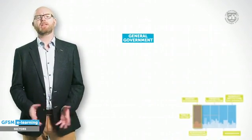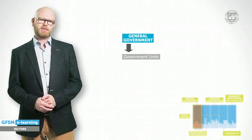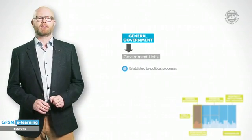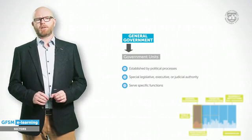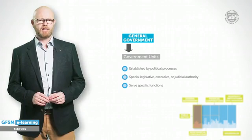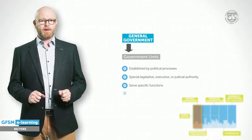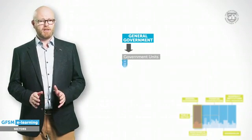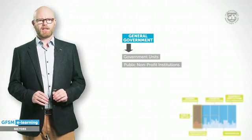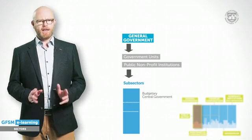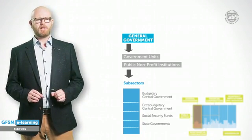How are the five main sectors and sub-sectors of the resident economy delineated? Let's start with the general government sector. Government units are unique legal entities established by political processes. They have a special legislative, executive or judicial authority over other units, and they serve specific economic functions, such as the provision of goods or services on a non-commercial basis or the redistribution of income and wealth. Their activities are primarily financed through taxation or compulsory transfers. In addition, general government includes non-profit institutions that are controlled by government units. For all those units, GFSM defines five sub-sectors: budgetary central, extra-budgetary central, social security funds, state governments, and local governments.